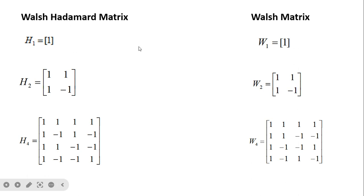For a single element, H1 and W1 are the same. For H2 and W2 they are also the same. Here there is zero sign change — all values are positive so no sign change — and here the sign changes from plus to minus one, so it is one sign change. They are already in increasing order: zero sign change and one sign change.